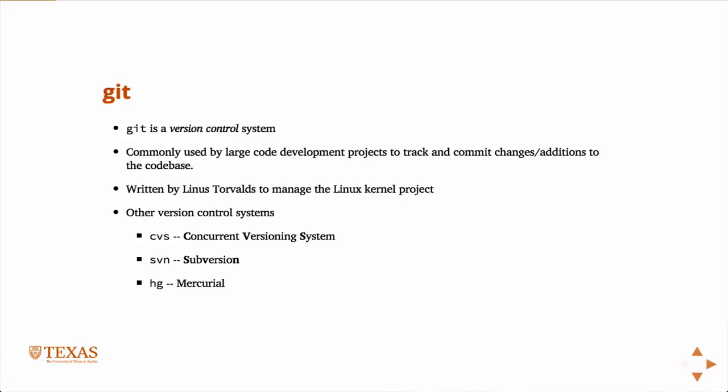If you had a career in software development, you'd almost certainly be expected to know Git or some other version control system, although Git is the most ubiquitous now. Once you have some knowledge of how to use it, you'll see the usefulness of it, and you may choose to use it for version controlling other things besides software. For example, I use it all the time to track changes to papers I'm writing.